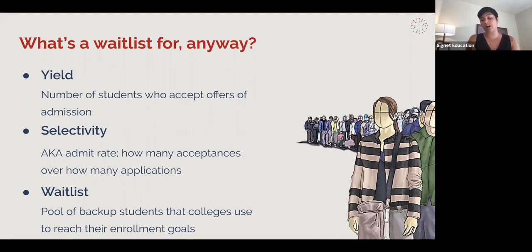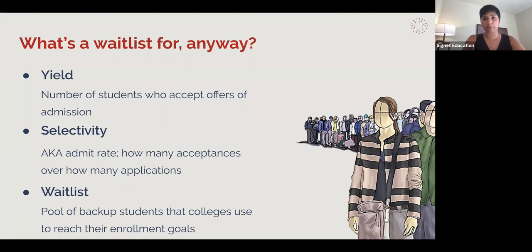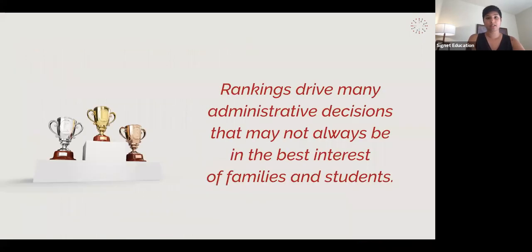There's a much larger system working behind the scenes. The waitlist helps the school manage these things: if, come May 1st or June 1st, fewer students than expected are planning to attend and send a deposit, colleges start pulling from their waitlist. The waitlist is really a pool of backup students that colleges use to reach their enrollment goals. There is historical data on this — you can actually see how many people have been waitlisted and how many have been accepted off certain waitlists in years past, though that changes from year to year.